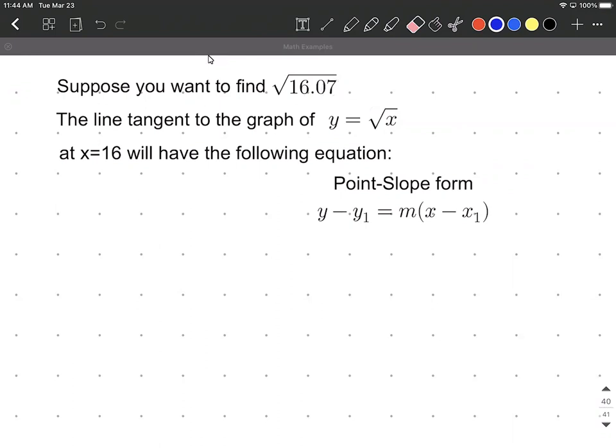All right, so I'm going to choose to use the point-slope form of a line initially. So to do so, I need to find both a point and a slope.